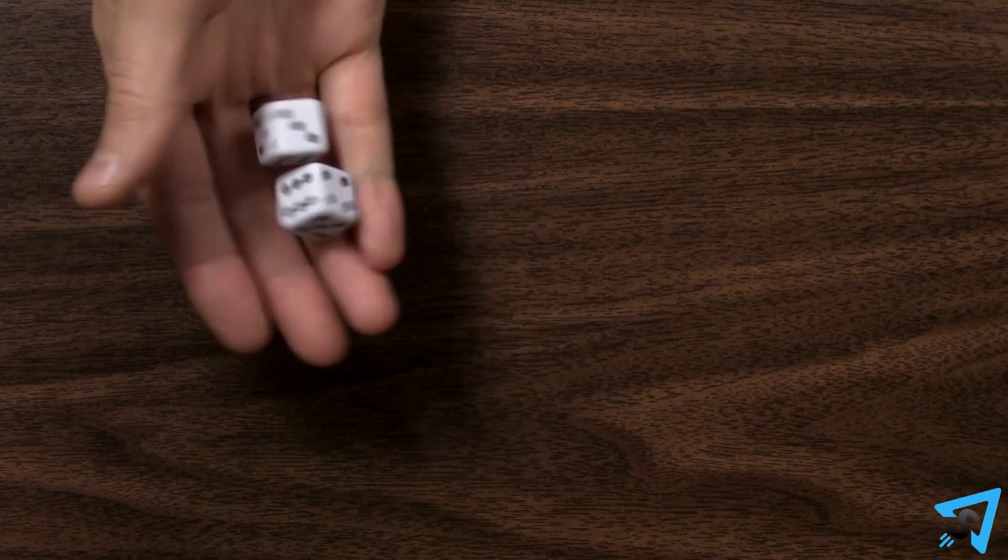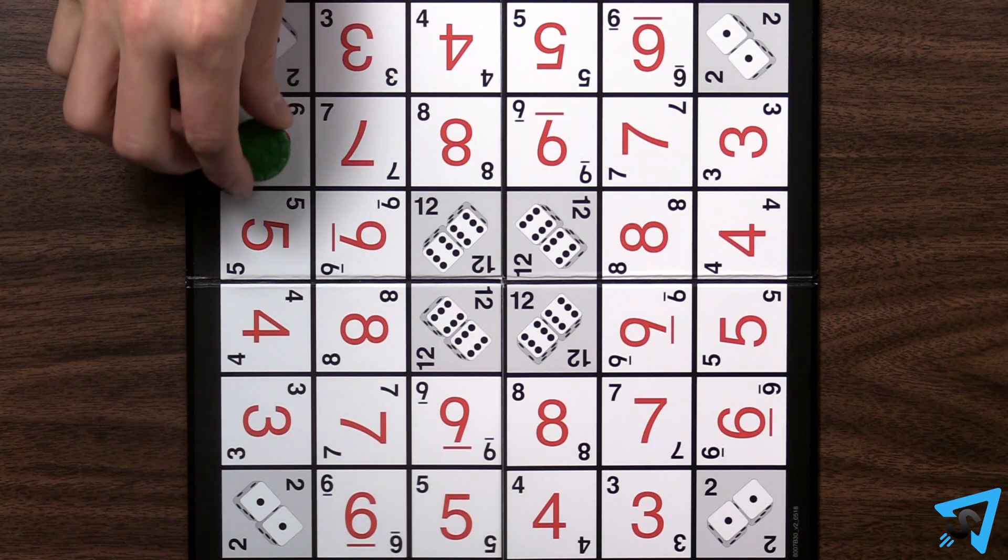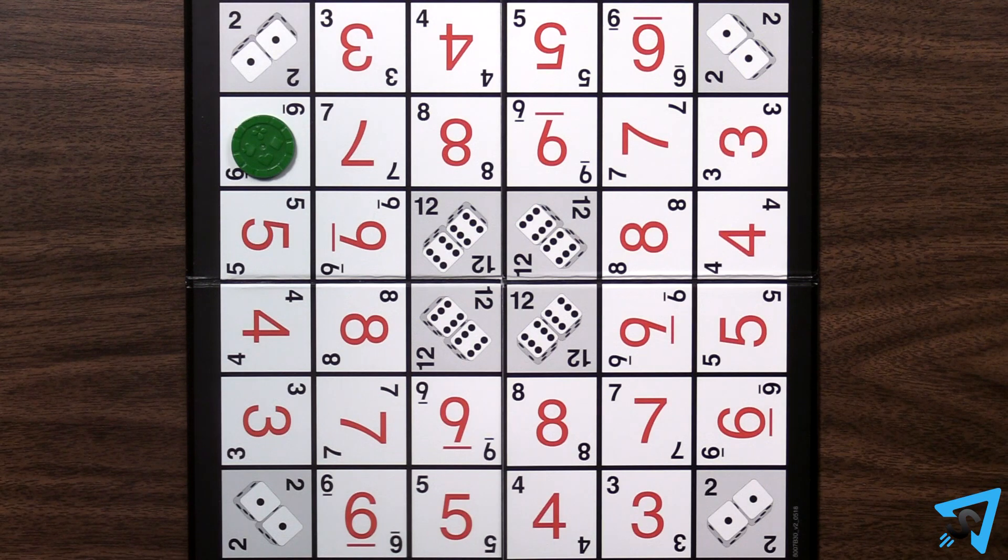On your turn, roll the dice, then place one of your chips on an empty space of the value of the total sum rolled. Then you end your turn.